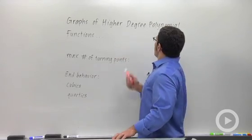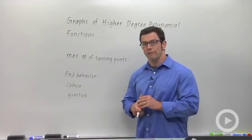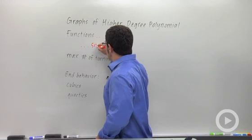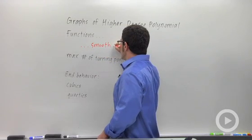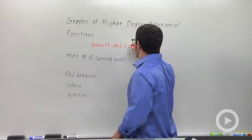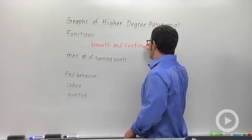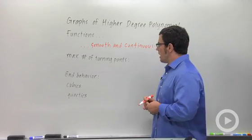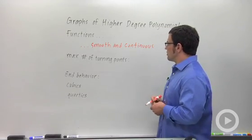All right. So the graphs of higher degree polynomial functions. First and foremost, the graphs are always smooth and continuous. Now that just means there aren't going to be any corners, and there aren't going to be any breaks in the graph as you draw them. They'll always have nice curves, and be nice and smooth.